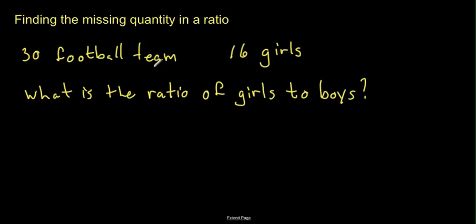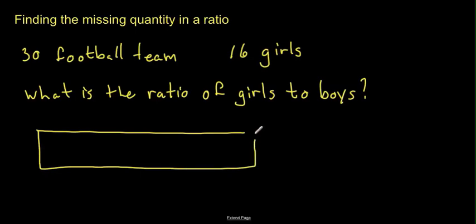So, we know we've got 30 in the team, and we know that 16 of them are girls. So, let's draw my favorite rectangular shape. And let's suppose that this shape represents all the players. So, there we've got all the players, so there are 30 children.